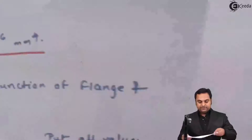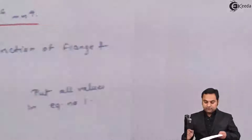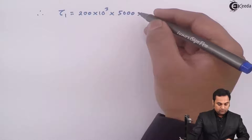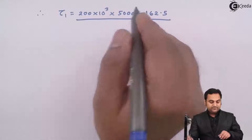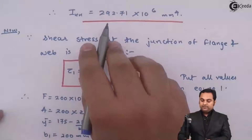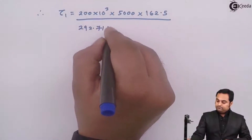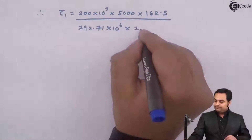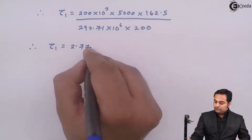Putting all values into the formula: τ₁ = (200 × 10³ × 5000 × 162.5) / (292.71 × 10⁶ × 200). On calculating this, τ₁ comes out to be 2.77 N/mm².